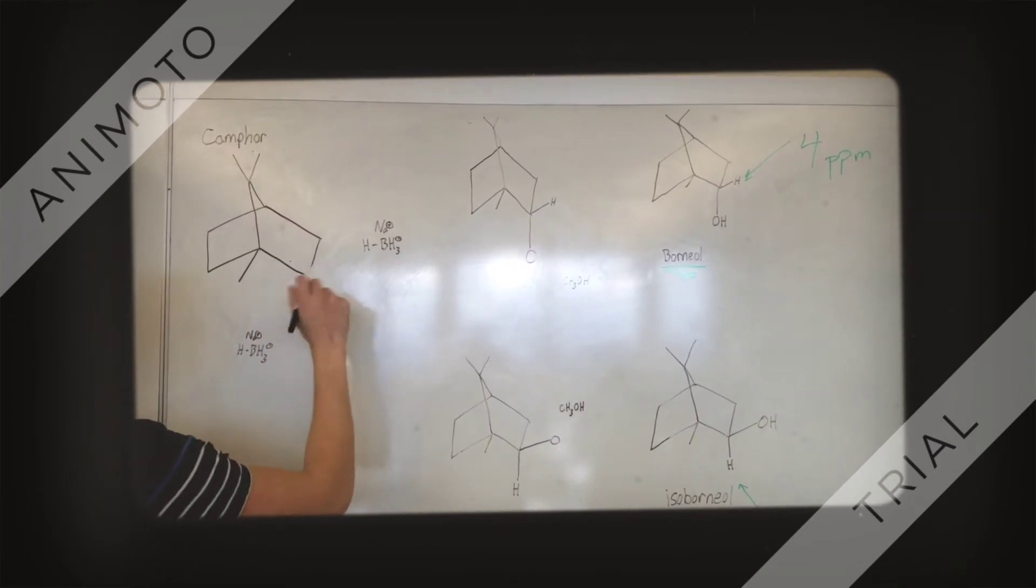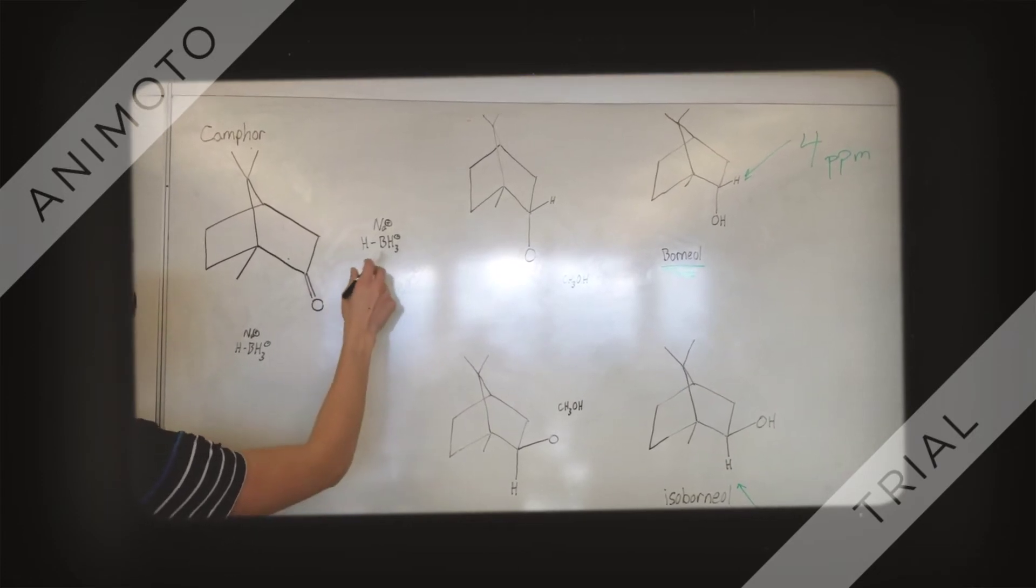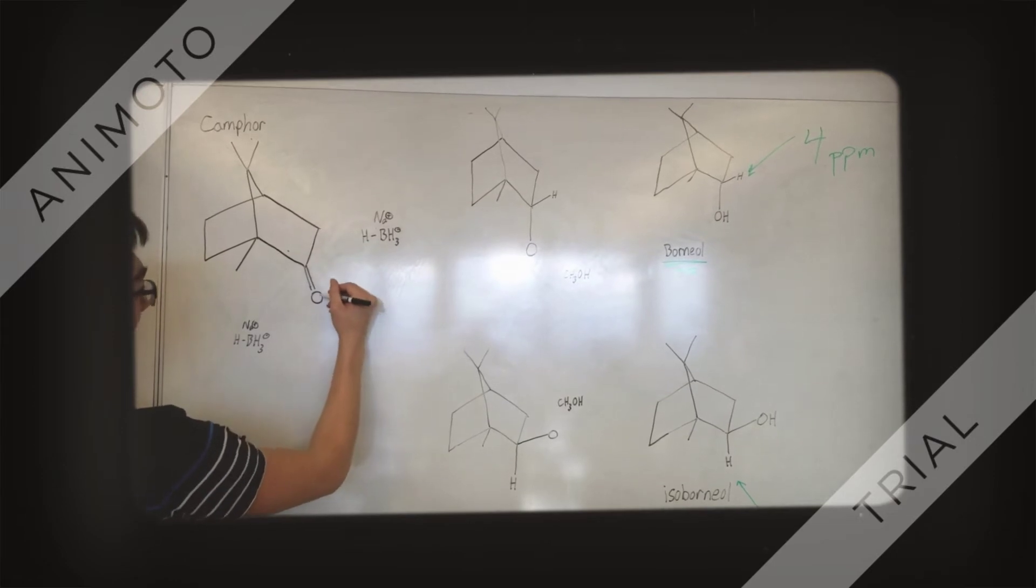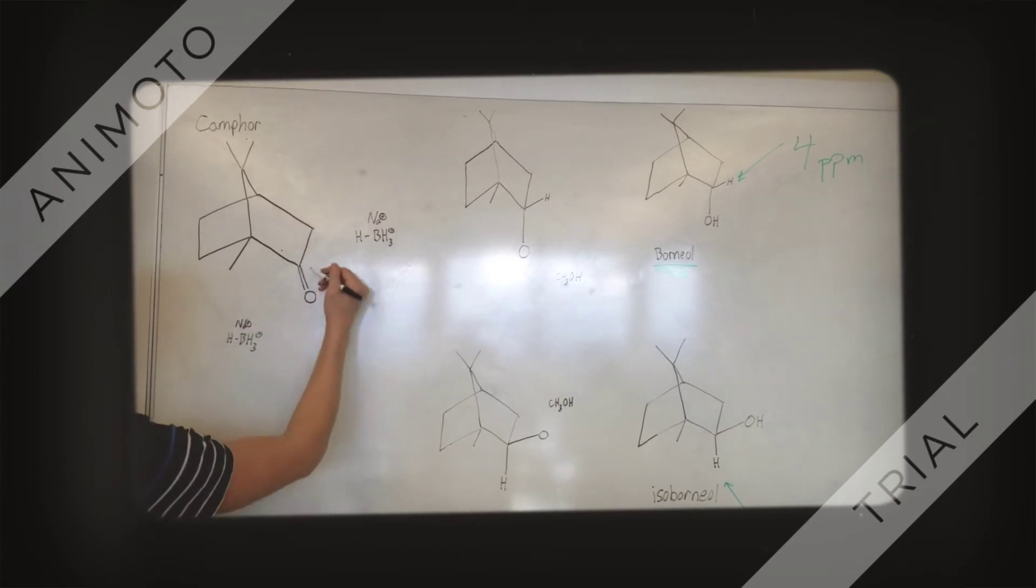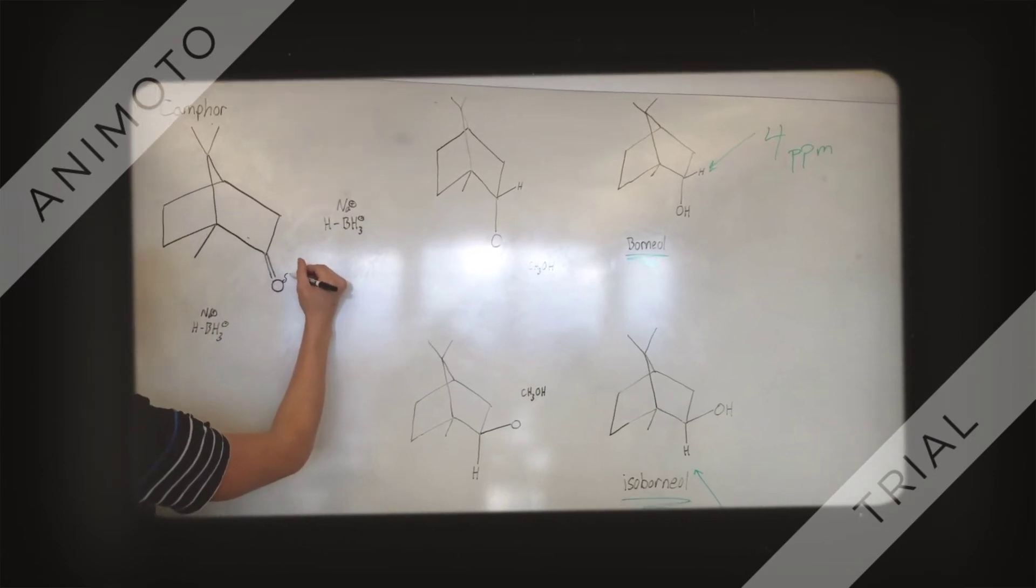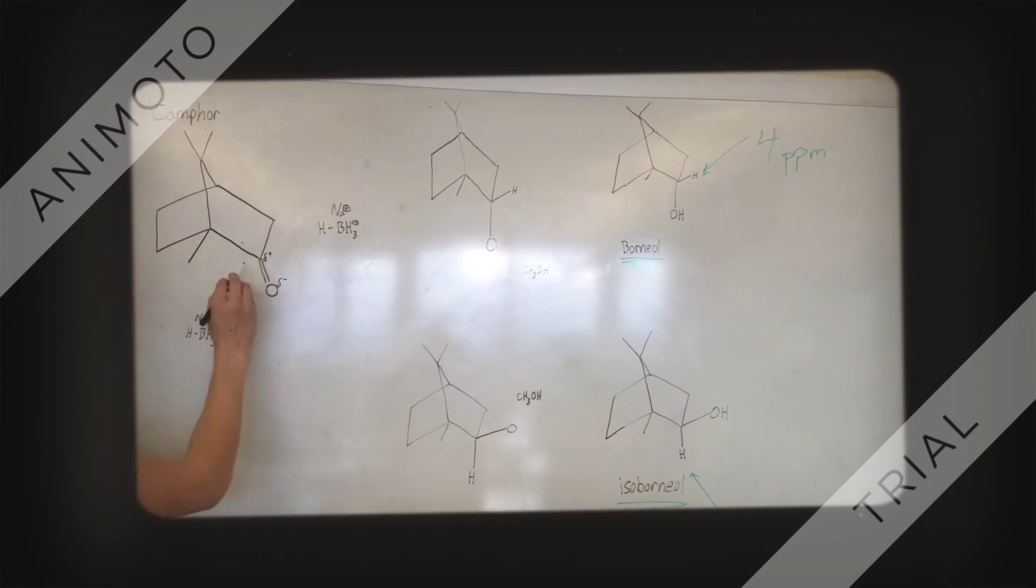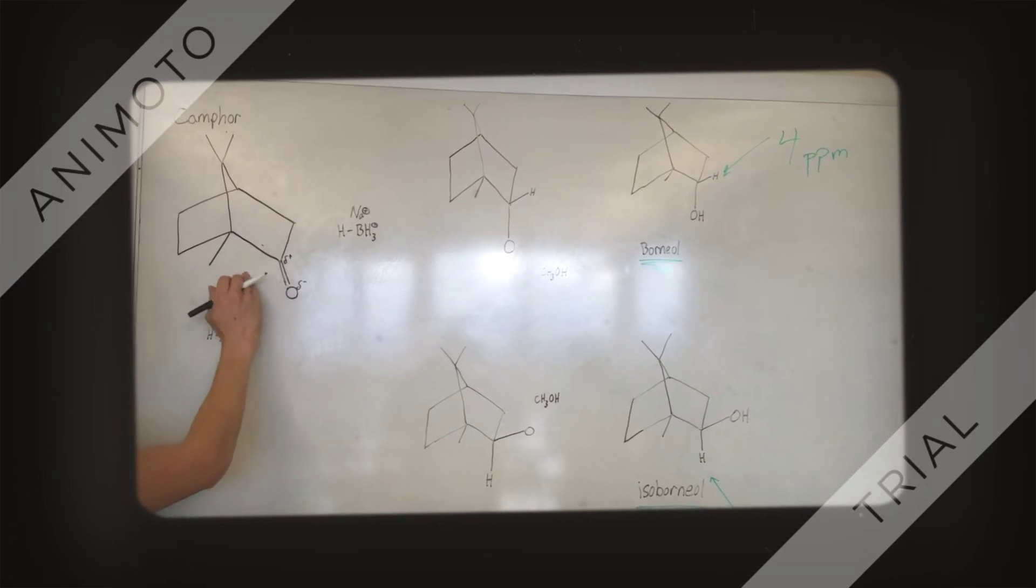Now, the nucleophile here will be the hydride hanging off of this borohydride. Since oxygen is more electron withdrawing than carbon, it's going to draw a partially negative charge. The carbon is going to be left with a partially positive charge, so this carbon will act as the electrophile in this reaction.